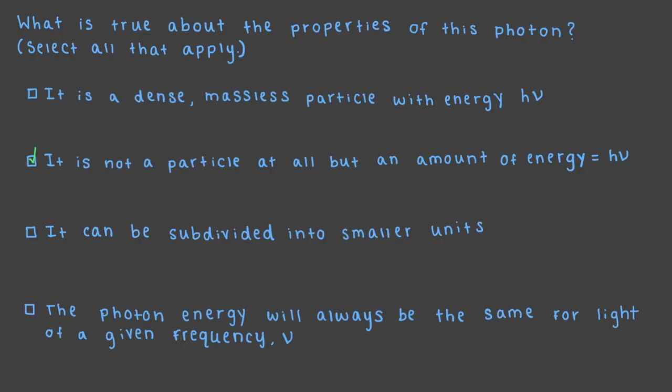A photon is a quantity of energy and is always the same for light of a given frequency. This light can never transfer energy in smaller or larger amounts, only h nu. It is also important to remember that it is not an object, rather a discrete amount of light energy.